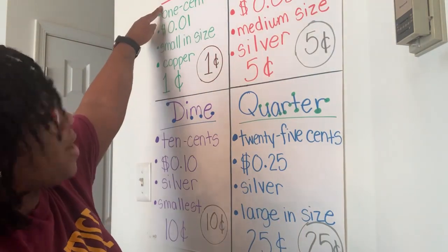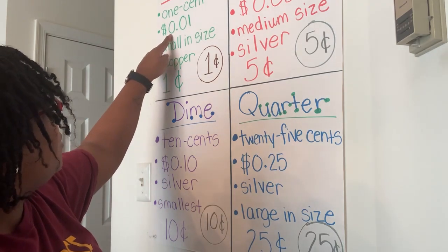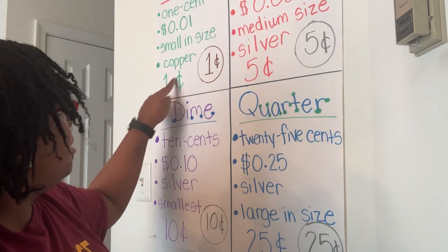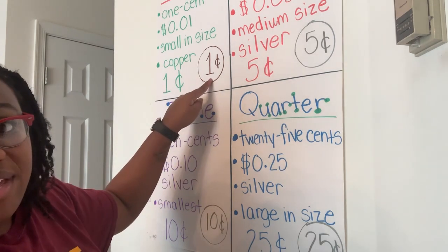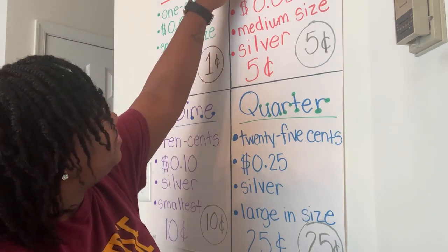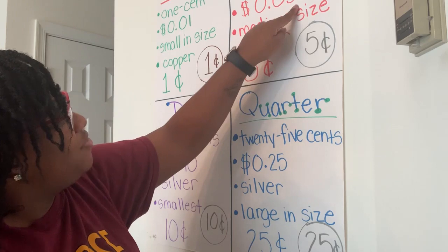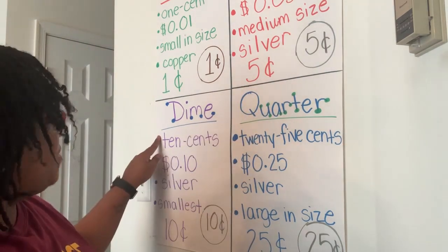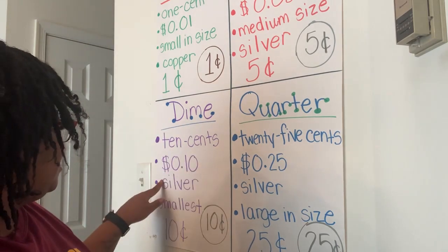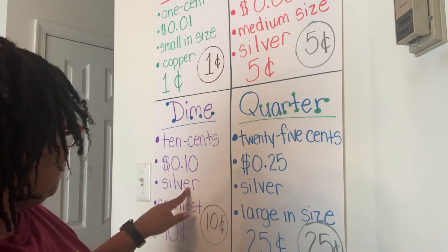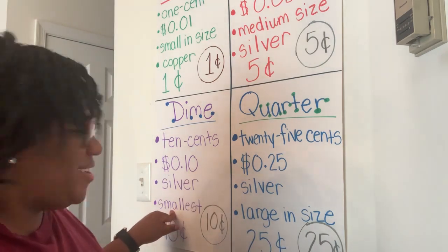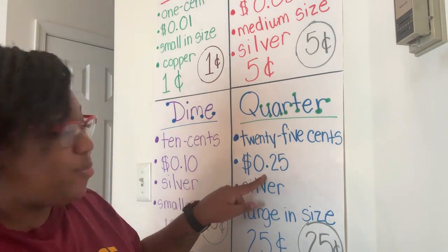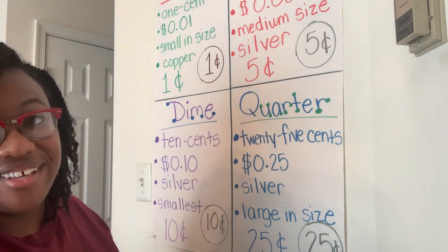Now we're going to talk about each of the coins again. Our penny is worth one cent — you write it as $0.01. Our penny is small in size, it is copper, and it is brown. Our nickel is worth five cents — you write it as $0.05. It is medium size and silver. Our dime is worth ten cents — you write it as $0.10. It is silver and it's our smallest coin. And our quarter is worth 25 cents — you write it as $0.25. It's silver and large in size.